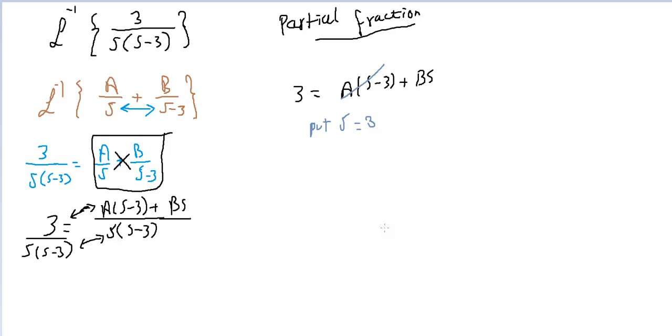This will be cancel out. So we will have B. 3B equal 3. So B equal 1. 3B equal 3 that means that B equal 1.